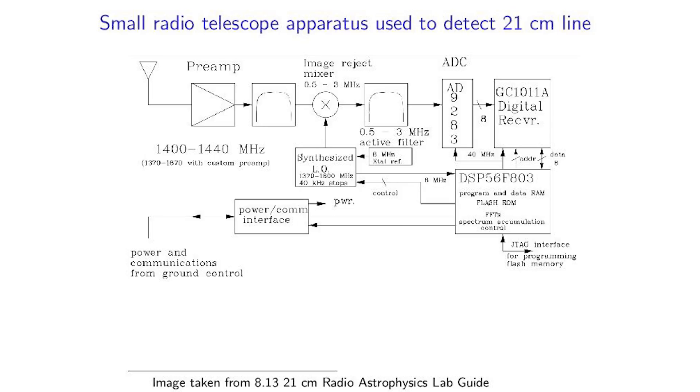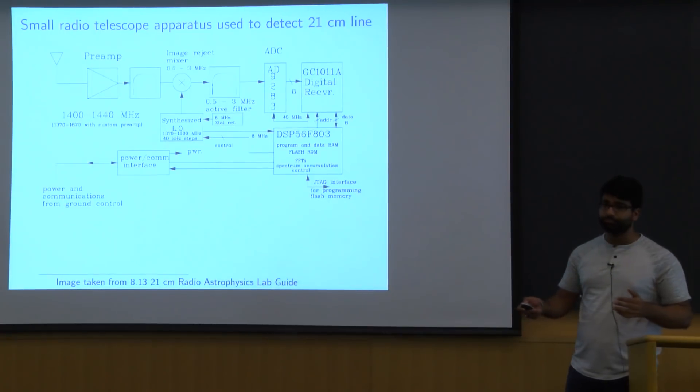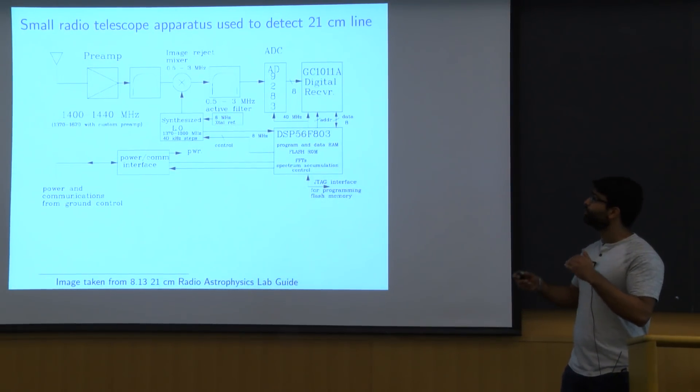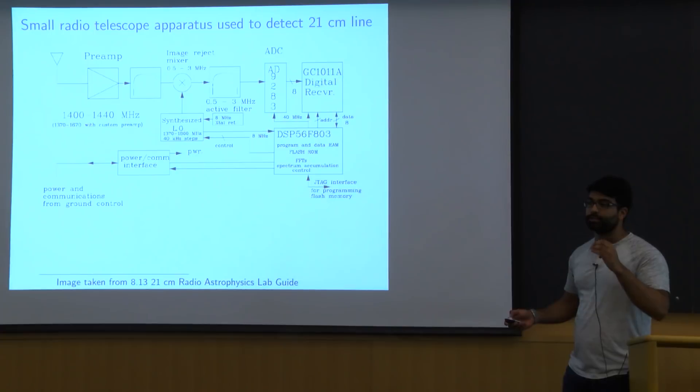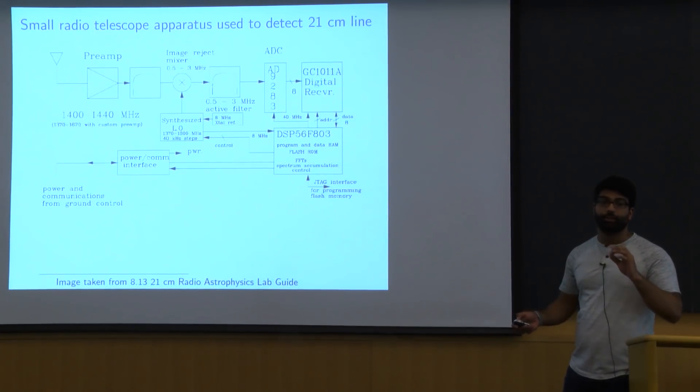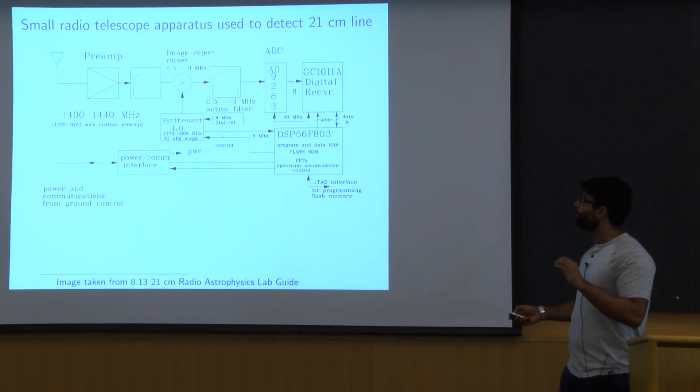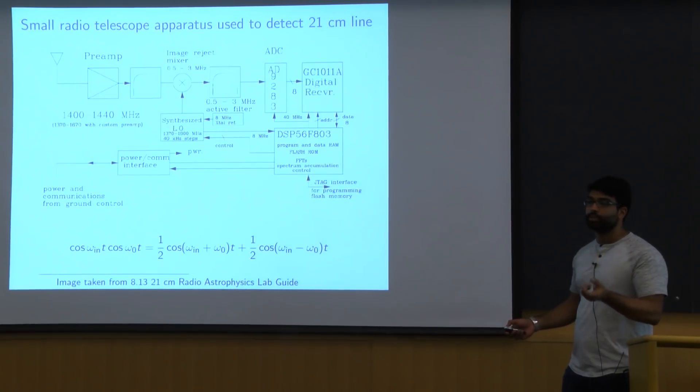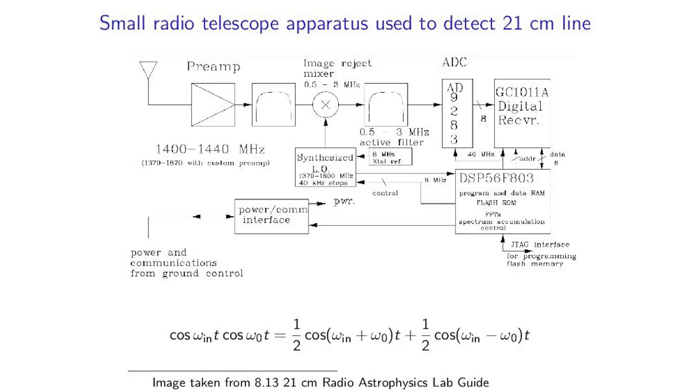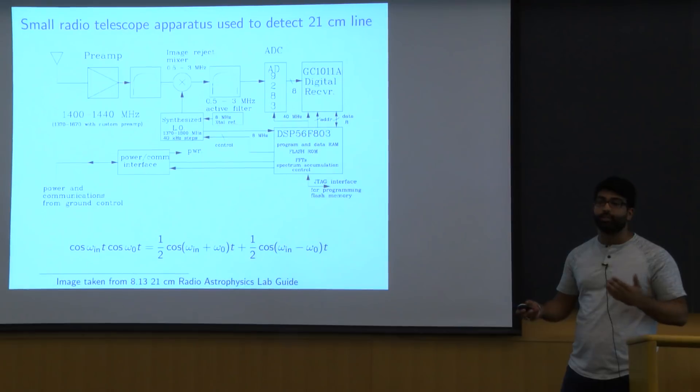And then one important point is that it goes through this image rejection mixer. And what that does is it multiplies the incoming signal by a signal that we manually put in of 1420.4 megahertz. That's the frequency of the 21 centimeter line that we're looking for. And as you can see from this trigonometric formula, multiplying two signals is actually equivalent to just producing one signal whose frequency is the sum and one who's the difference. And by using the second bandpass filter, we can eliminate the sum and just be left with this signal which is the difference.